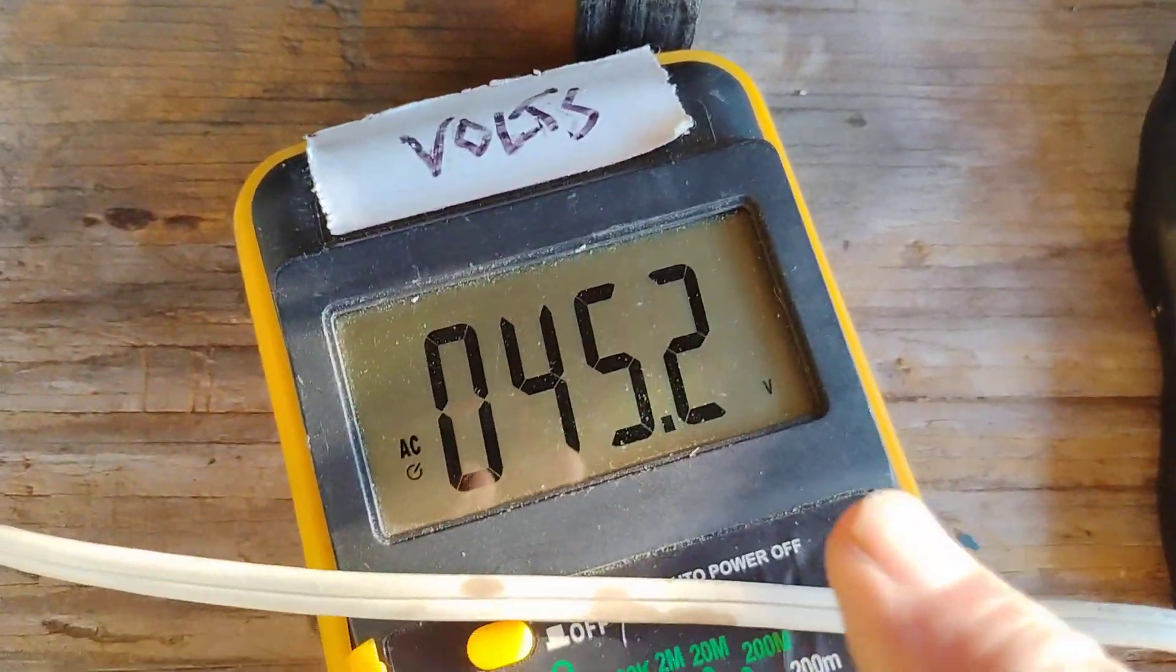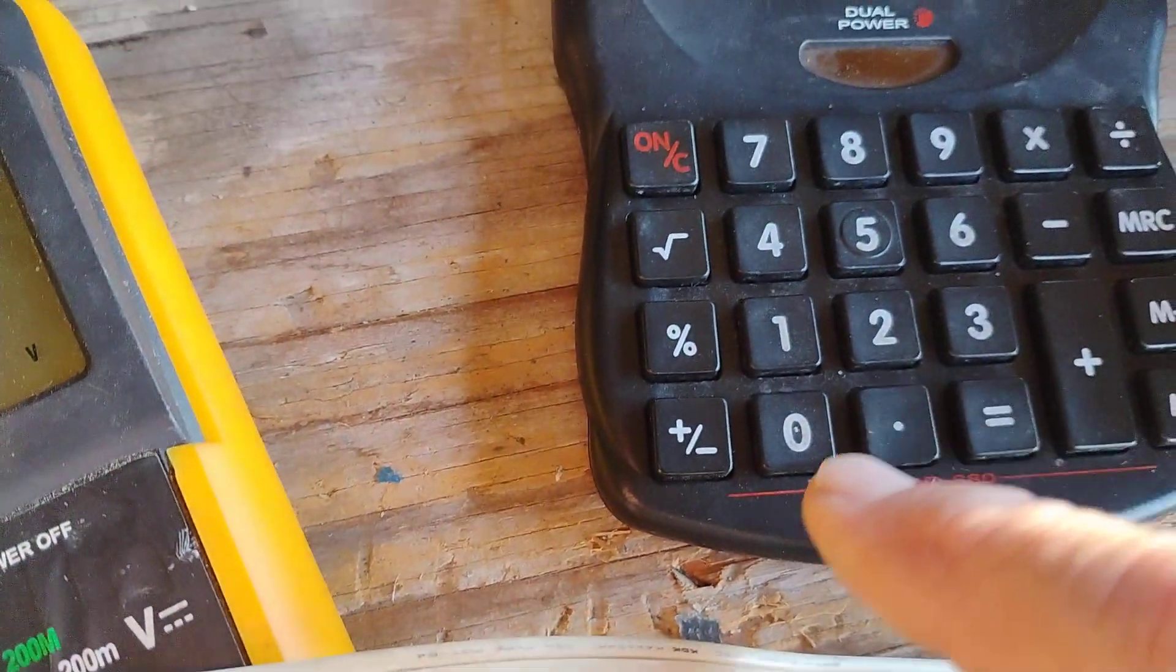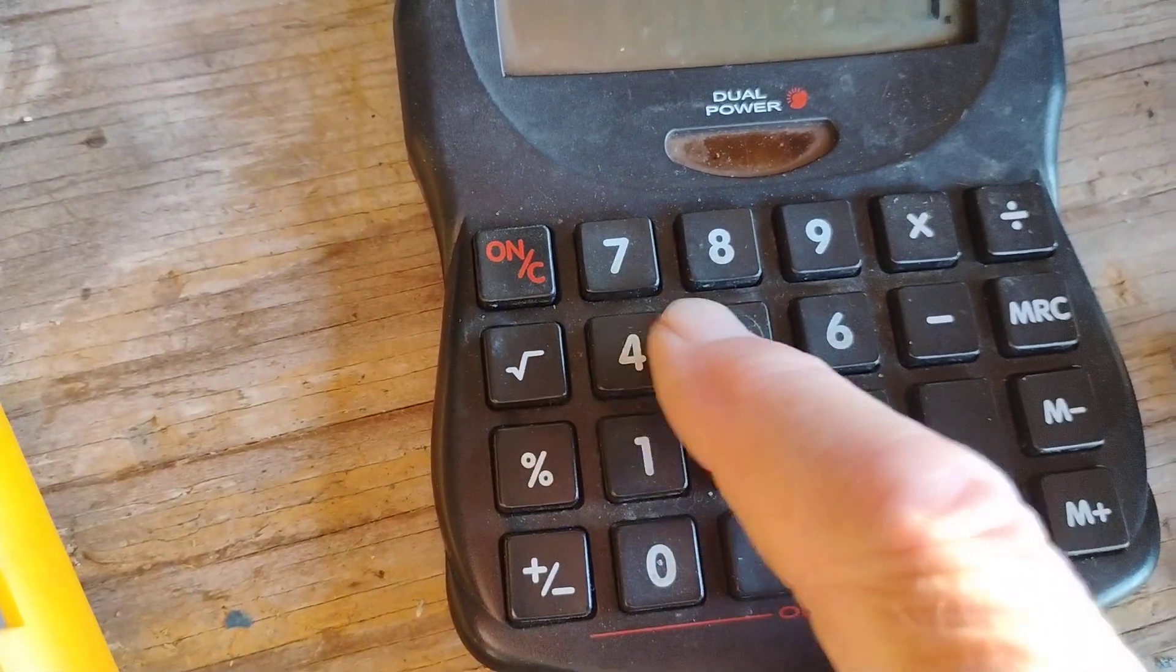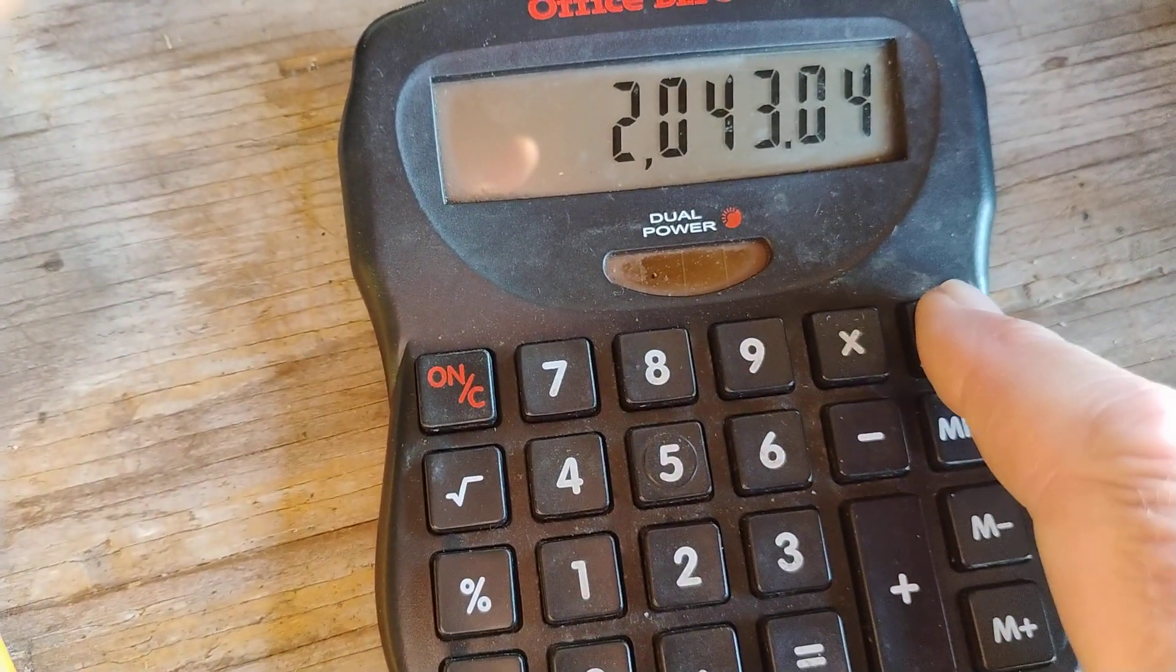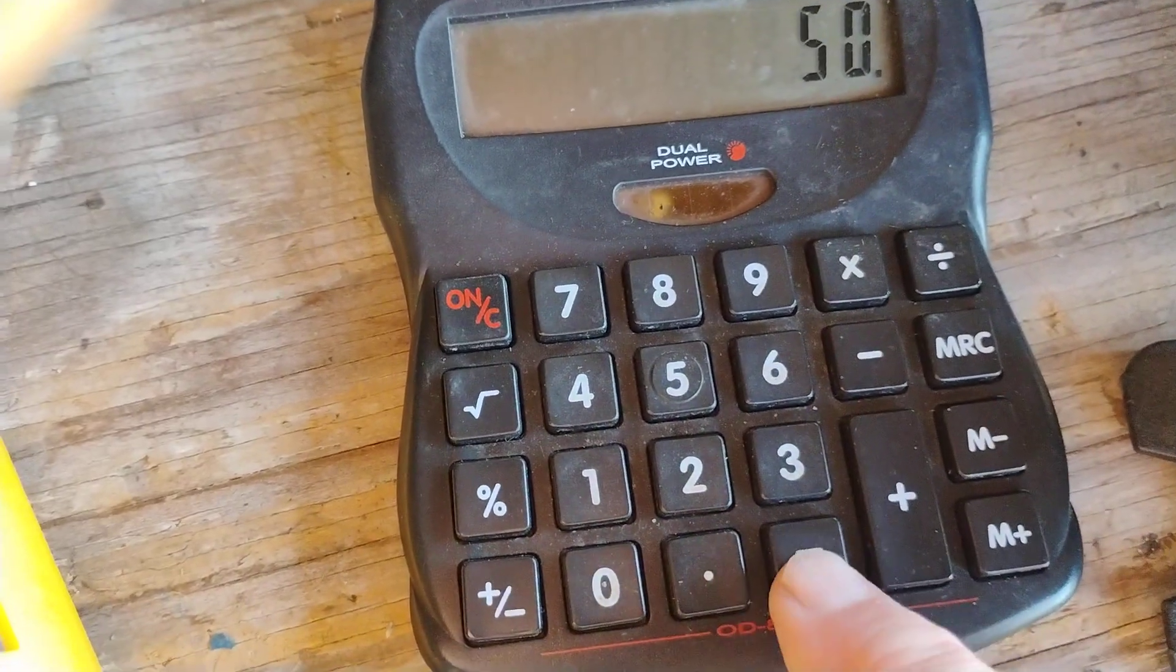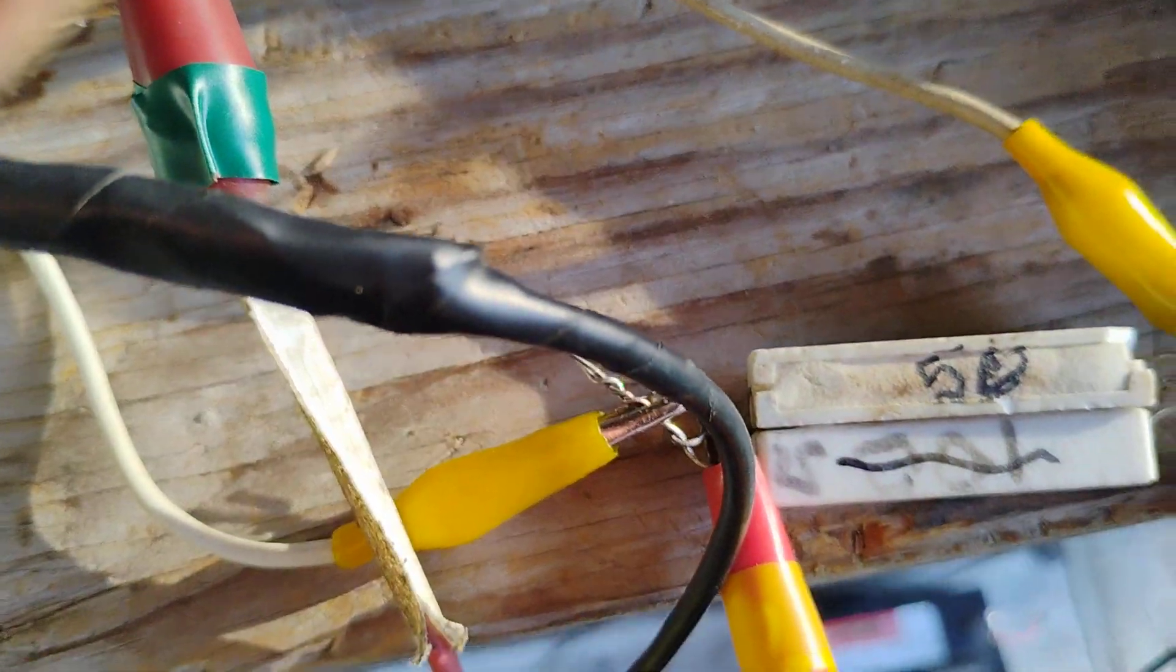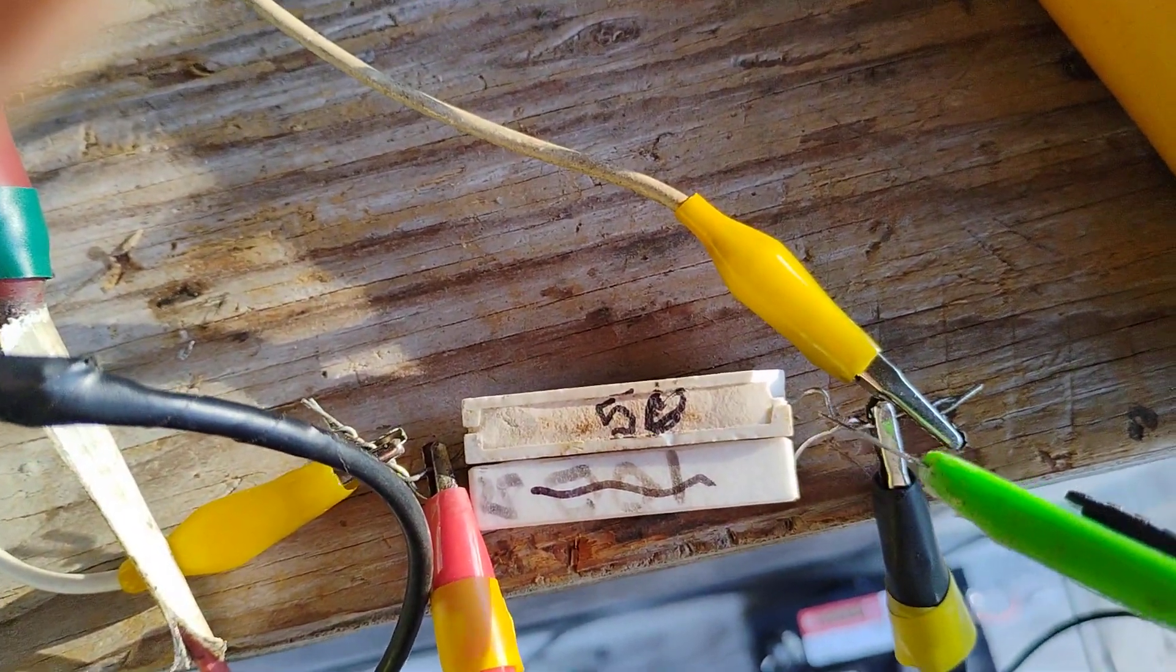So let's figure the output right now with this calculator. 45.2 times 45.2 equals this number divided by 50 equals 40.8 almost 41 watts output right now into this resistor. This is 200 ohm resistors in parallel.